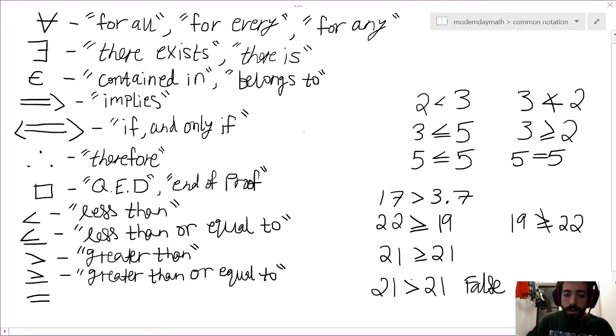So looking down here, going to the greater than territory, right, we have greater than in between seventeen and three point seven. So this would read seventeen is greater than three point seven. Looking over here, this would read twenty-two is greater than or equal to nineteen. And we could even have a statement like nineteen is not greater than or equal to twenty-two, and simply write nineteen is strictly less than twenty-two. That would be the negation of this greater than or equal to symbol.